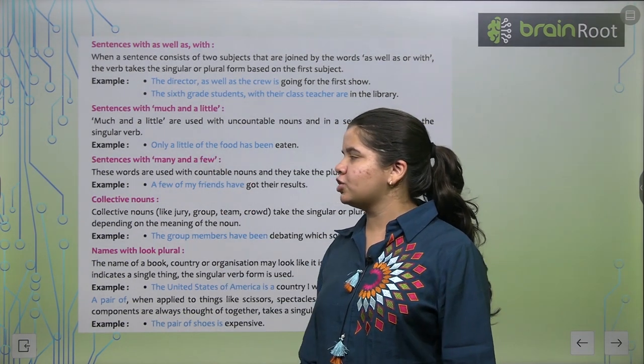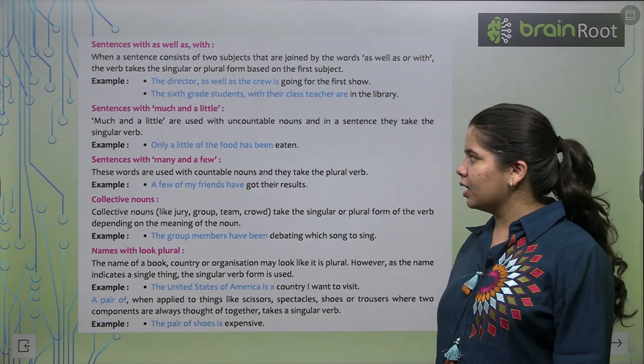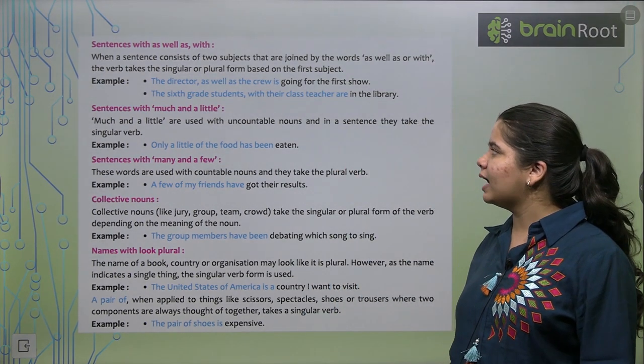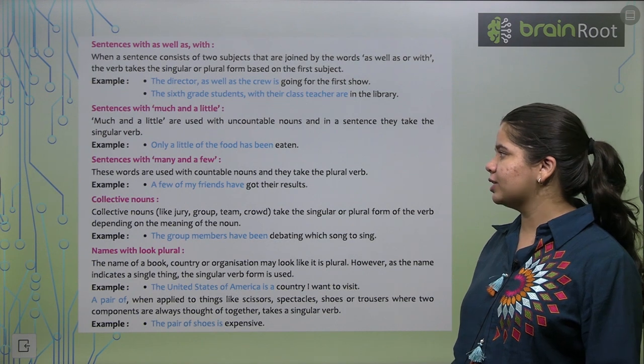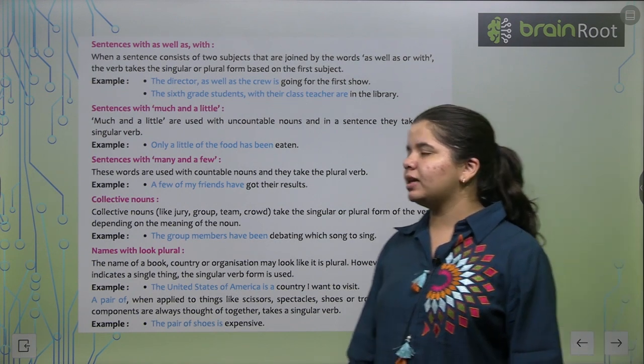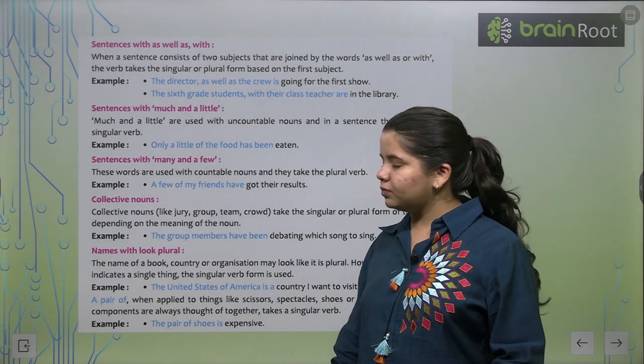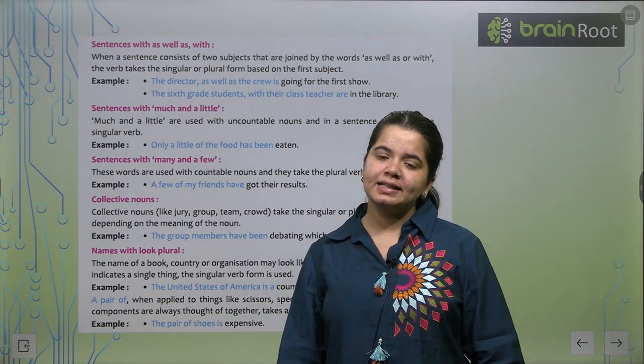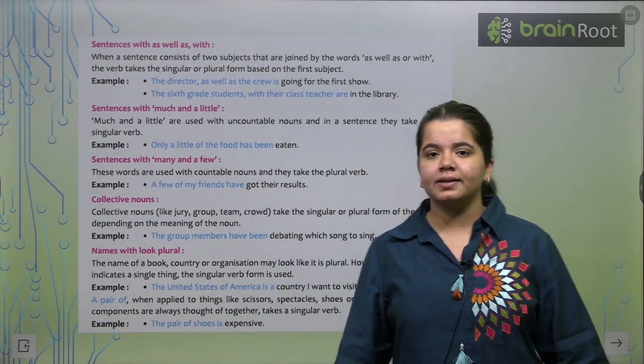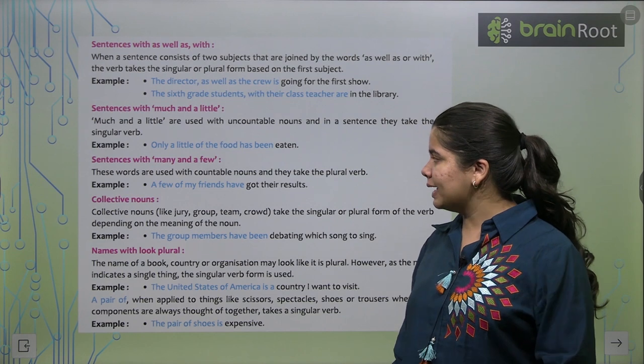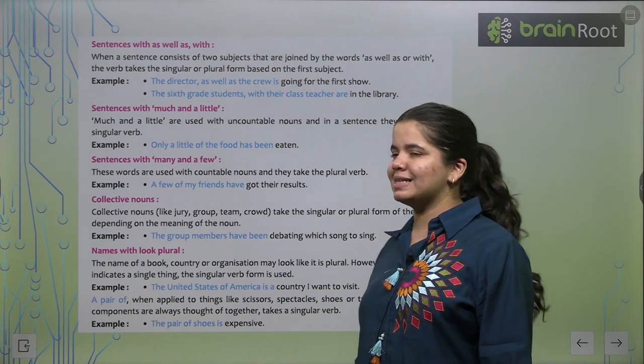Next, sentences with much and a little. Much and a little are used with uncountable nouns in a sentence. So, they take a singular verb. Toh, much and little kya hota hai? Uncountable nouns hota hai. Toh, unke saath hume hum ek singular verb use karte hai. Jaise, only a little of the food has been eaten.